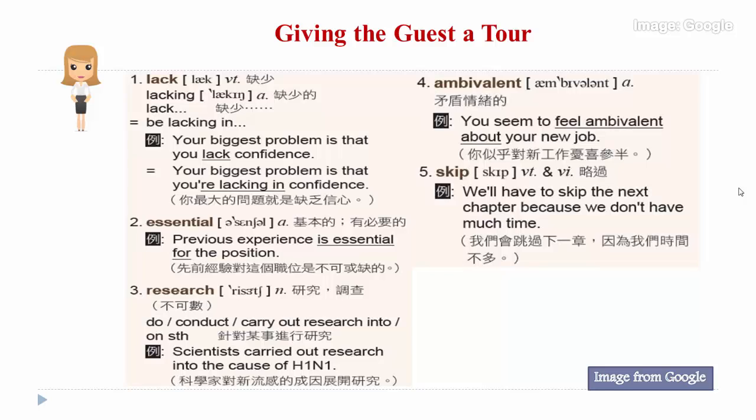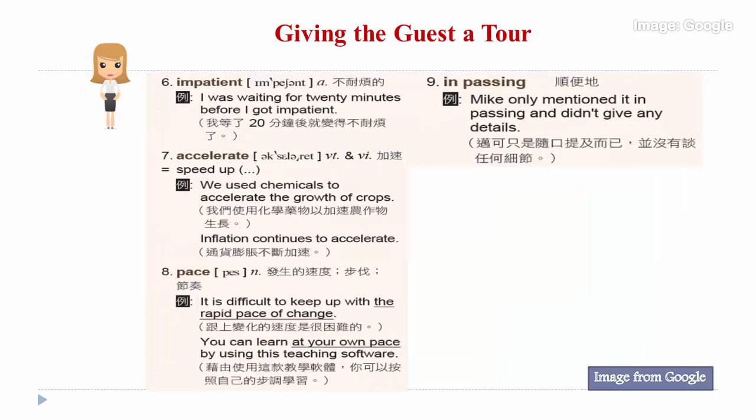Or if you are a tour guide and don't have much time, you may skip some areas and save much time for the best parts. Six: impatient. Impatient means easily annoyed by someone's mistakes or because you have to wait. For instance: I was waiting for 20 minutes before I got impatient.